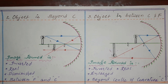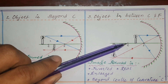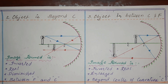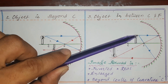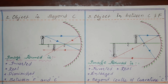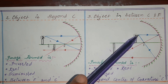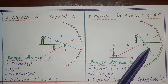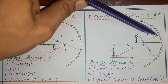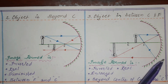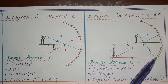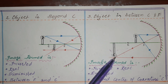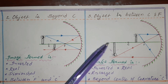In the third position, the object is kept in between F and C — between the focal point and the center of curvature. We consider the same two light rays: the first emits from the object and travels parallel to the principal axis, and the next travels towards the focal point. The first ray reflects and passes through the focal point; the next ray, which passes through the focal point, becomes parallel after reflection.